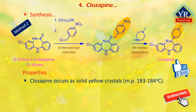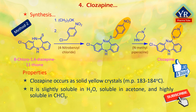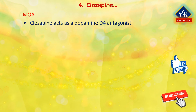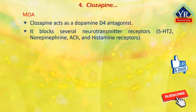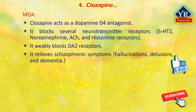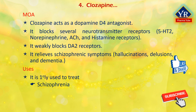Clozapine occurs as solid yellow crystals with a melting point between 183 and 184 degrees centigrade. It is slightly soluble in water, soluble in acetone, and highly soluble in chloroform. Clozapine acts as a dopamine, especially dopamine D4 receptor antagonist. It also blocks serotonin type 2, norepinephrine, acetylcholine, and histamine receptors. Unlike traditional antipsychotic agents, it weakly blocks dopamine type 2 receptors. It relieves schizophrenic symptoms such as hallucinations, delusions, and dementia. It is primarily used to treat people with schizophrenia and schizoaffective disorders who have had an inadequate response to other antipsychotics or who cannot tolerate other drugs due to extrapyramidal side effects.